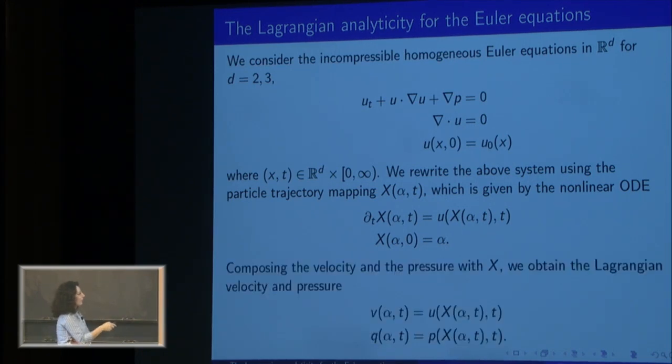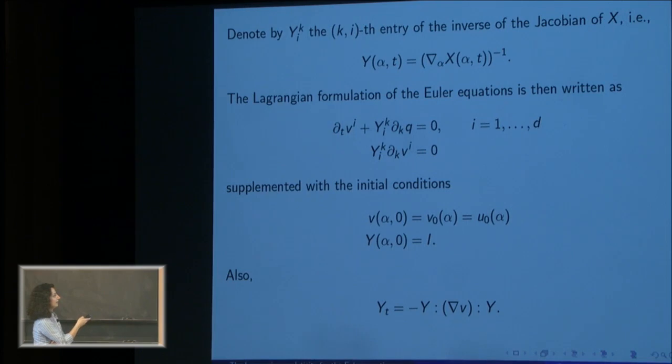Composing the Eulerian velocity and the pressure with this trajectory mapping, we get to the Lagrangian versions, v and q. Another thing that comes up in the Lagrangian setting is the inverse of the Jacobian of this mapping, the change of coordinates. We have this matrix, which I'm going to denote with Y. Then using these new variables v, Y, and the pressure q, which could be written in terms of the velocity, we have this Lagrangian formulation of the Euler equations. Again, a system of d plus one equations, and we close the system with the initial conditions. At time t equals zero, we have our initial data u₀. At time t equals zero, the matrix Y is the identity matrix.